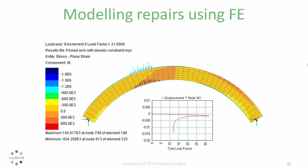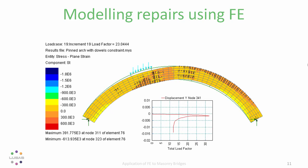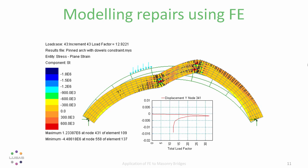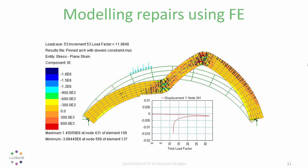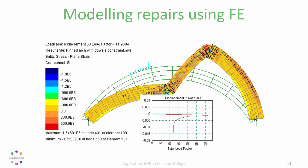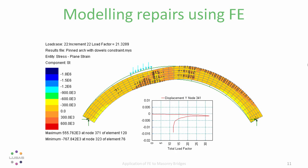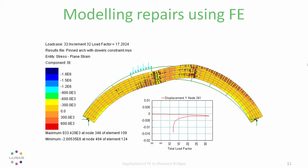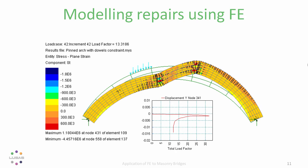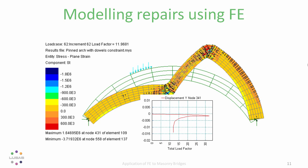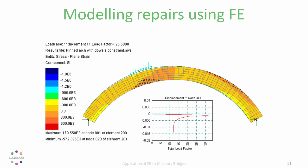But, the failure mechanism here is quite different from either the model which included ring separation or the model which excluded it. It is more brittle. It occurs more rapidly with little deflection to tell us that the structure is in distress. With this information, a client might prefer to monitor a substandard bridge, not carrying out such repairs, rather than carrying out repairs which could mean that failure can occur with less warning.